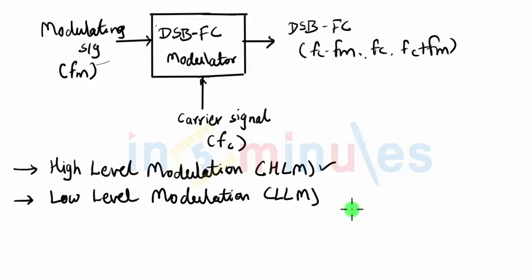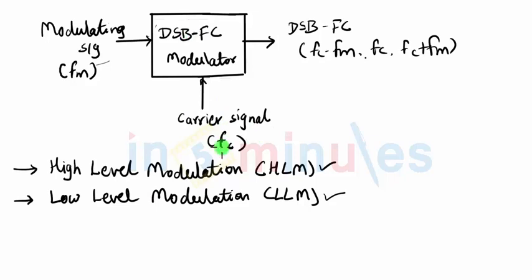On the other hand, in low level modulation we do not power amplify the modulating signal before modulation. The modulating signal will contain a low amount of power and will be given to the modulator as it is. Because of that, the carrier is also not power amplified and is given to the modulator with low power content. The DSBFC output will therefore be of low power and not suitable for direct transmission through the antenna. Since the signal must have a specified minimum power before transmission, in LLM we require power amplifiers after the modulation stage.